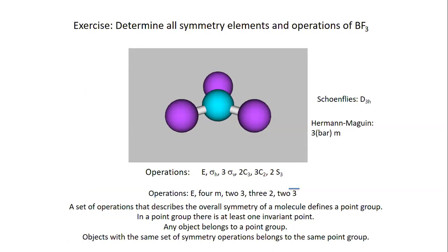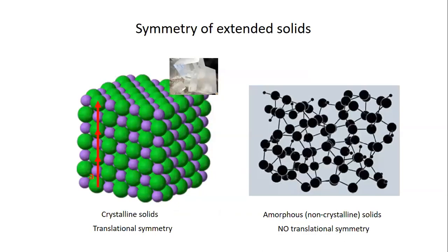We now know everything needed about the symmetry of molecules. I have kept this fairly short — a much more extensive treatment is given in my other course, Chem 347 or 407, which deals more with molecular structures including coordination compounds. I do not want to duplicate that material, so I keep it to the minimum here and will continue with the symmetry of extended solids, which is not part of that other course.